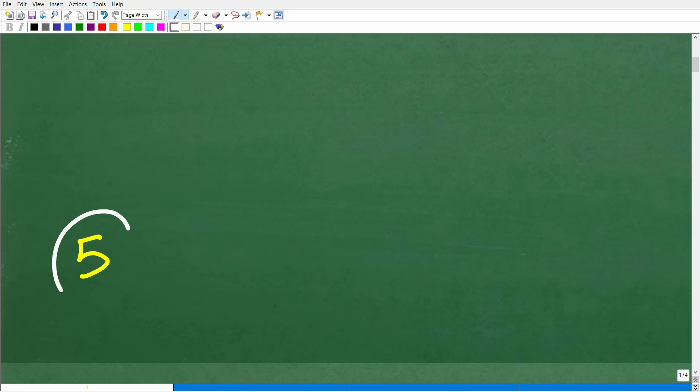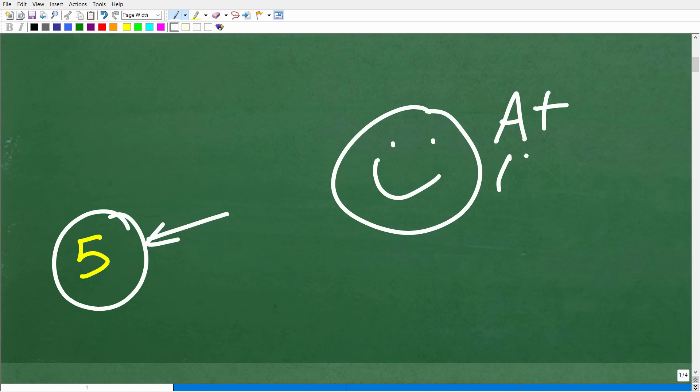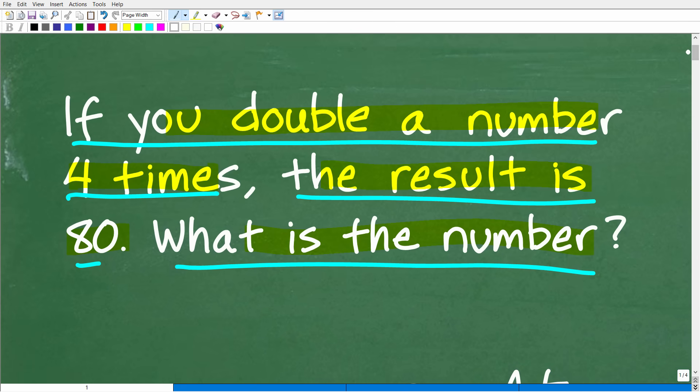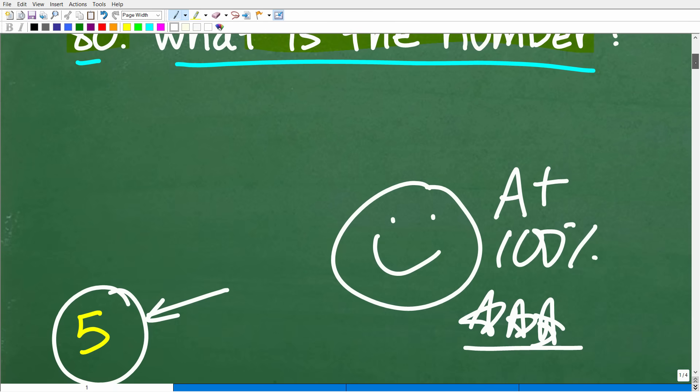The correct answer is 5. Okay, so how did you do? Well, if you figure this out, we have to celebrate by giving you a nice little happy face. An A plus, a 100%. And multiple stars, so you could brag to your friends and family that, indeed, you are a math whiz and you were able to solve a math word problem using a method that worked for you.